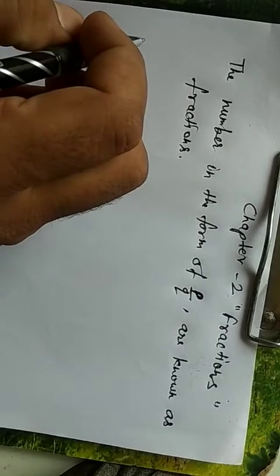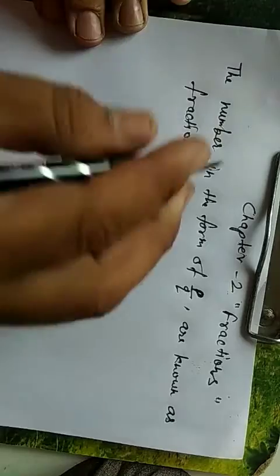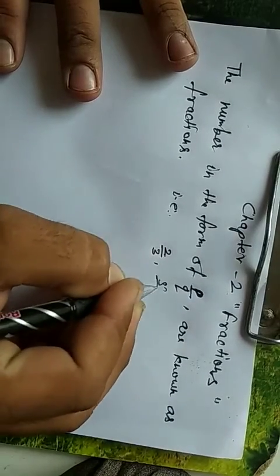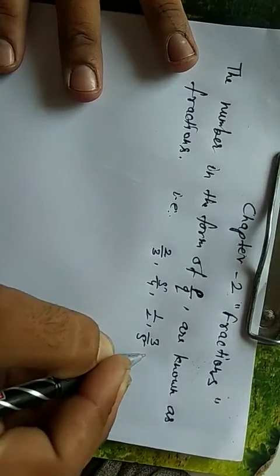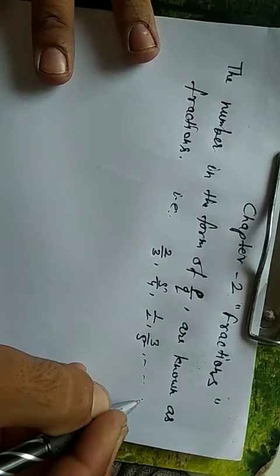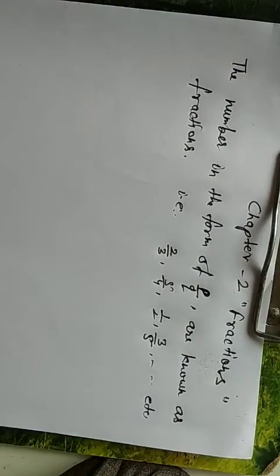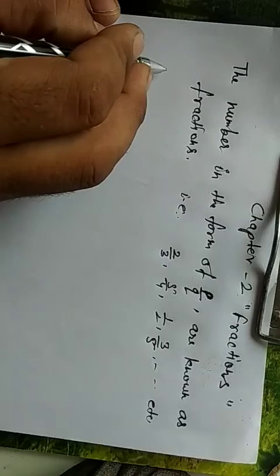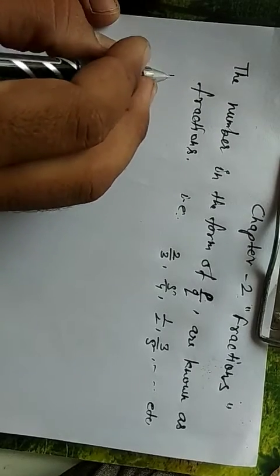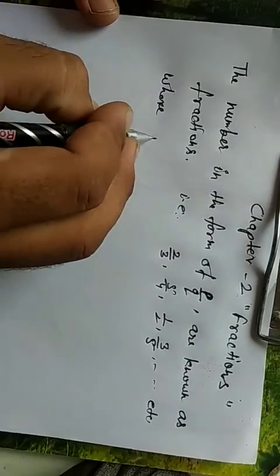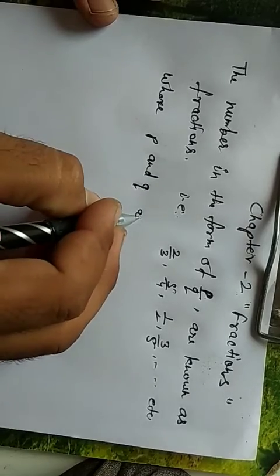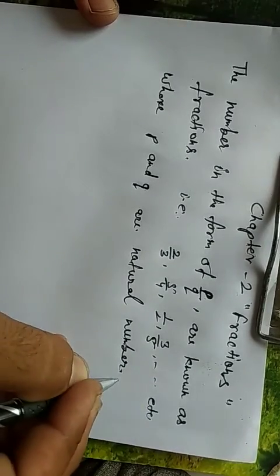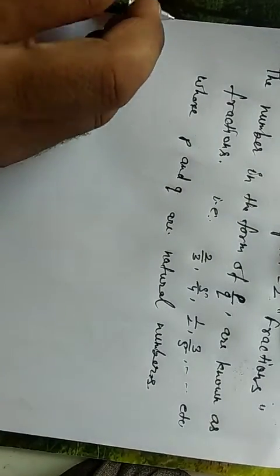The numbers in the form of P upon Q are known as fractions. For example: 2 upon 3, 5 upon 4, 1 by 2, 3 upon 5. Here P and Q are natural numbers.